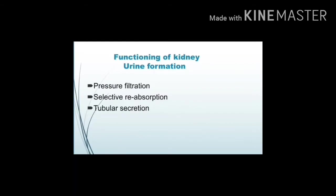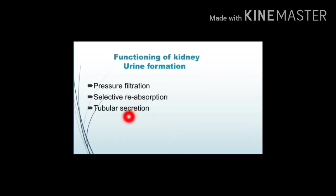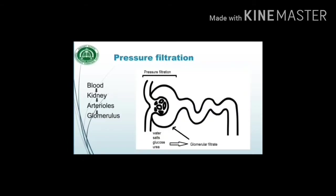The main function of the kidney is urine formation, which takes place in three steps. The first step is pressure filtration, the second step is selective reabsorption, and the last step is tubular secretion. We will discuss these steps one by one.